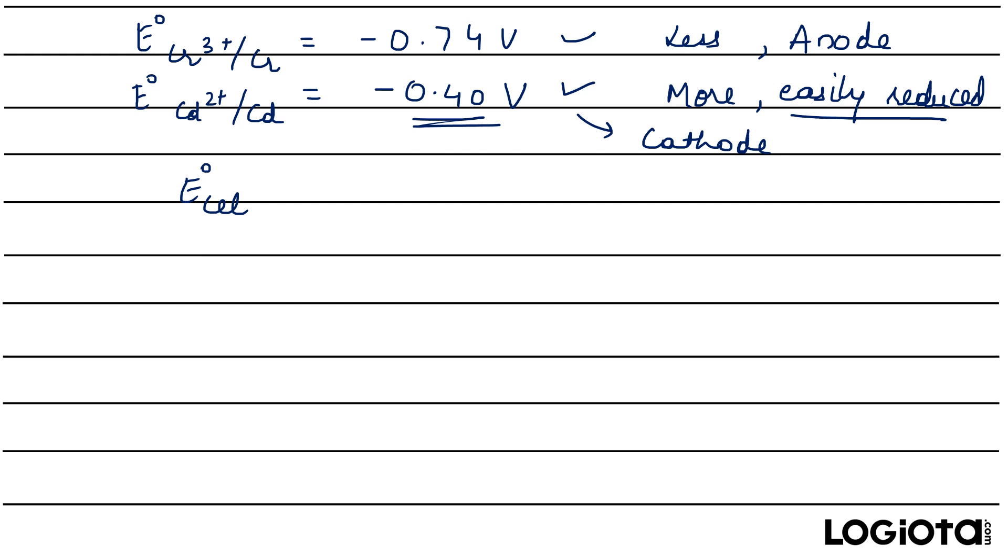Right, now to find the E° of the cell or you can say the standard cell potential, the formula is E° of cathode minus E° of anode.